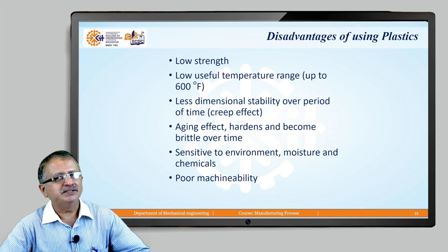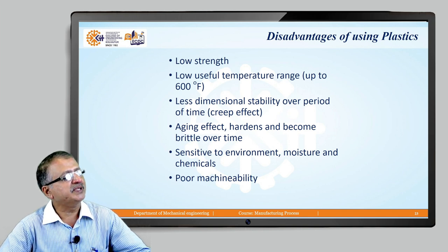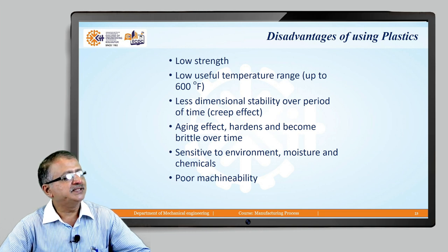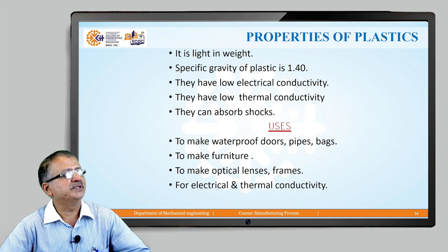Before deploying plastic, we must also look into its limitations: it has low strength, low useful temperature range, and low dimensional stability. There is also an aging effect — over a period of time it hardens and becomes brittle. It is sensitive to environment, moisture, and chemicals, and it has poor machinability.